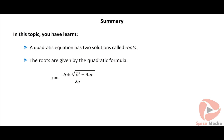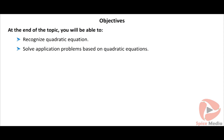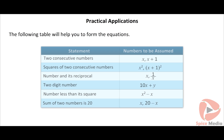In this topic you have learnt that a quadratic equation has two solutions called roots. The roots are given by the quadratic formula: x = (−b ± √(b² − 4ac)) / 2a.